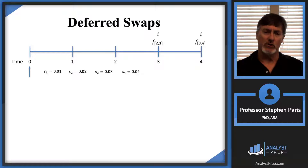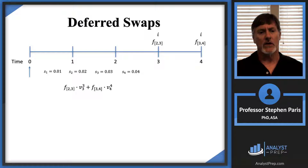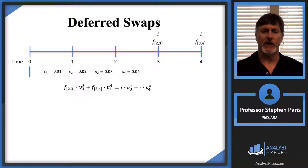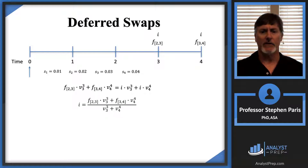We want to swap the interest payments based on forward rates for payments based on the fixed swap rate I, in a fair way. The fair way is to take the present value of each set and set them equal. The present value of the forward rates at time zero uses the forward rate from time two to time three, discounted by v₃³, and likewise for time four. Then we solve for I by factoring it out on the right-hand side and dividing.